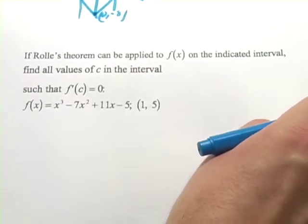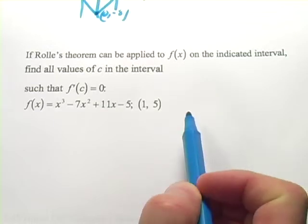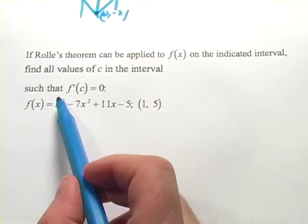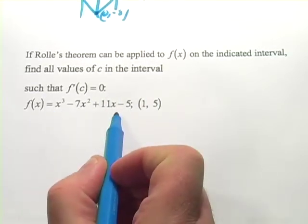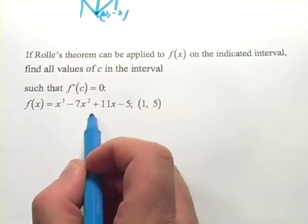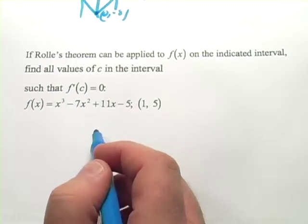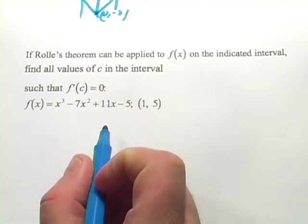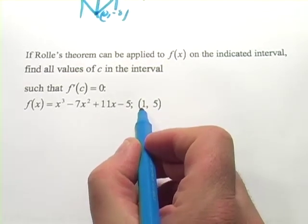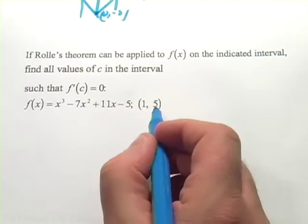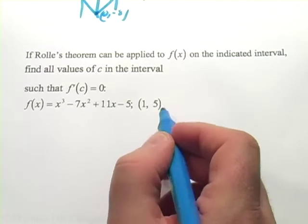Let's try another one. This one says: if Rolle's Theorem can be applied to f of x on the indicated interval, find all the values of c in the interval such that f prime of c equals zero. This is a nice polynomial — we know these kinds of functions are continuous and differentiable across their whole domain, so we don't have to worry about what we had to worry about with the absolute value function. Our interval is from one to five.